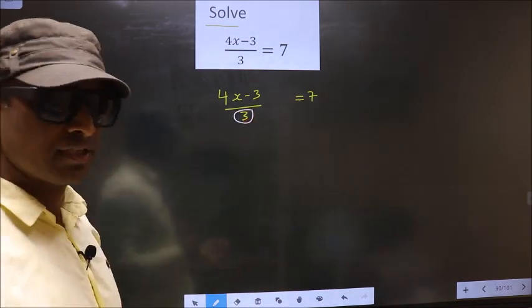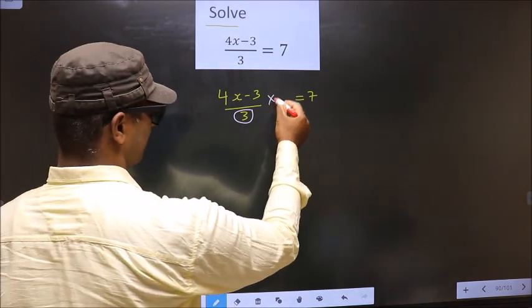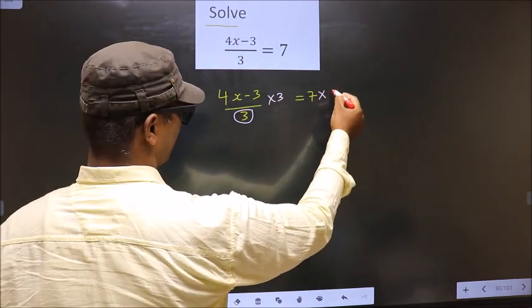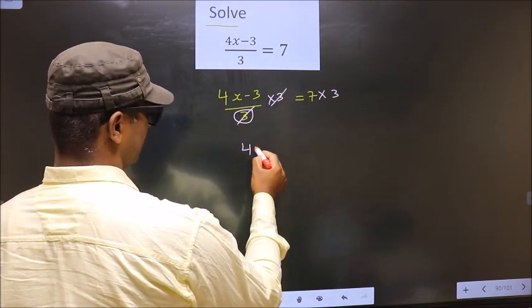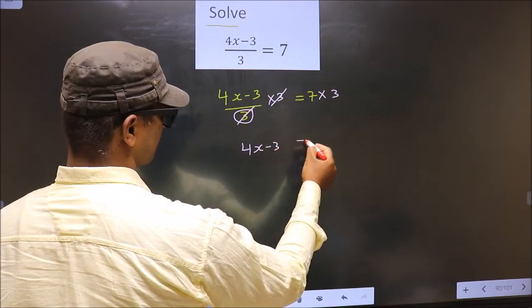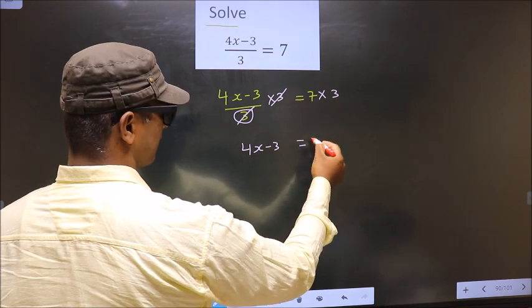Okay. So to remove 3, we should multiply by 3 on both sides. So now this cancels out. You are left with 4x minus 3 equal to 7 into 3, which is 21.